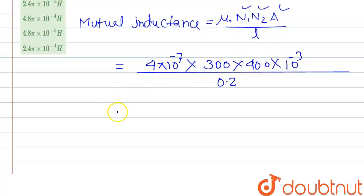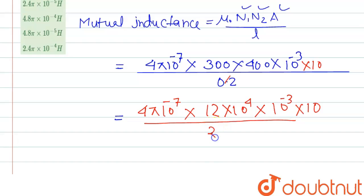So if we solve this, if we remove this decimal, here we can write 10 multiply by 10. So if we solve this, this will be 4 pi 10 to the power minus 7 into, here we can write 300 into 400, that is 2 into 10 to the power 4 into, here we can write 10 to the power minus 3 into 10 divided by 2, and here we can cancel 2 with 2.